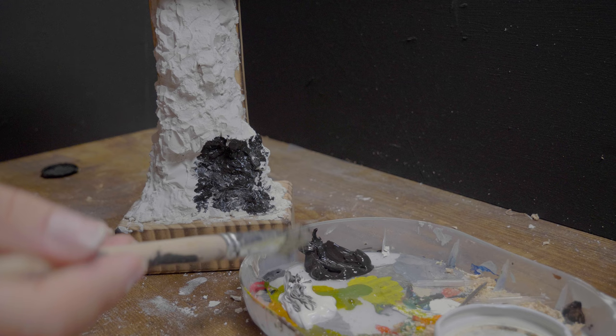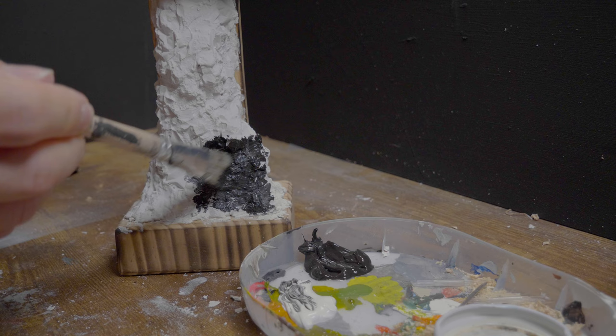When the plaster dries I use inexpensive paints from the hardware store. First I apply some black on which I then mix as long as it is wet with white and brown directly. So you get a natural looking color gradient.